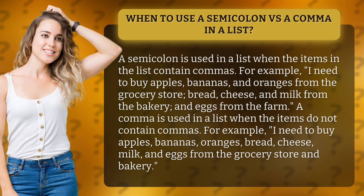A comma is used in a list when the items do not contain commas. For example, I need to buy apples, bananas, oranges, bread, cheese, milk, and eggs from the grocery store and bakery.